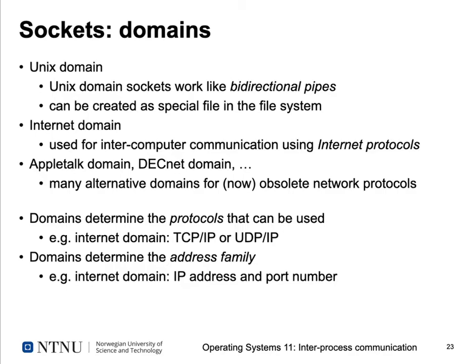Sockets can have different domains. One domain is the Unix domain, for communicating within a single Unix system. Unix domain sockets work like bi-directional pipes and are usually created as a special file in the file system, so they can only be used to communicate within one and the same system. A very common use case is the internet domain, used for inter-computer communication using internet protocols. There are additional domains like AppleTalk or DECnet for different protocols invented over the last 20 or 30 years, though most have fallen out of use.